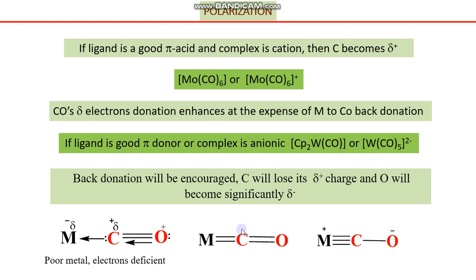This is actually the electron-rich species compared to the poor-metal case. In this case, the polarization is almost neutral — what we observe in normal carbon monoxide. When the pair of electrons localizes on oxygen, the negative charge cancels the positive charge. The electron density that was shifted from carbon toward metal created a certain charge, and then metal donates electrons back to carbon, so the negative and positive effects cancel each other. This species is comparatively neutral.